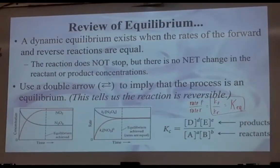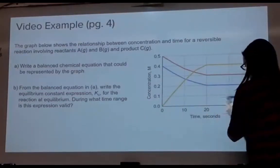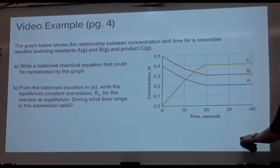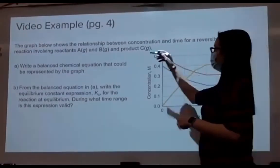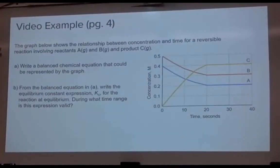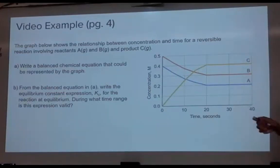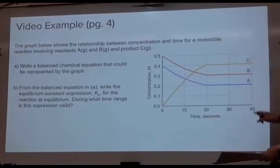The equilibrium constant does not ever have units. This video example was on page four of the notes — it's actually a question that AP put out. It says the graph below shows the relationship between concentration and time for a reversible reaction involving A, B, and C, where A and B are reactants and C is the product. Part A says write a balanced equation that could be represented by the graph. We have to use this graph and ideas from kinetics to figure out the coefficients.